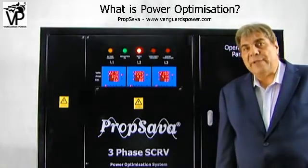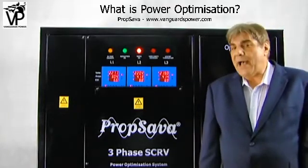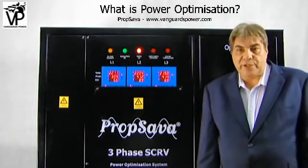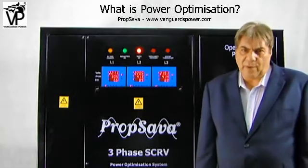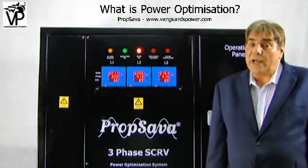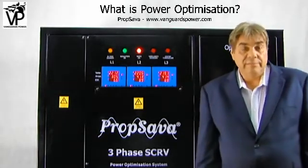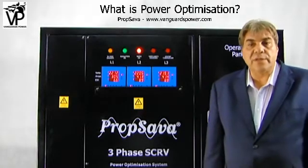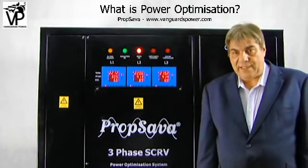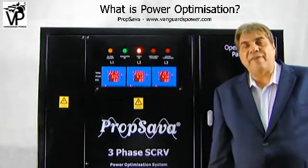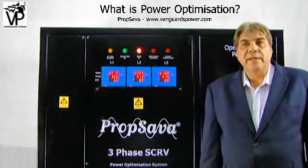That is a statement made by the Institute of Electrical Engineers, and they also comment on over voltage and its relationship to the life cycle of equipment. Their example was a 230 volt bulb used at 240 volts — again just an additional 10 volts — that will achieve only 55 percent of its rated life, meaning 45 percent, just under half the life of that bulb, is lost.